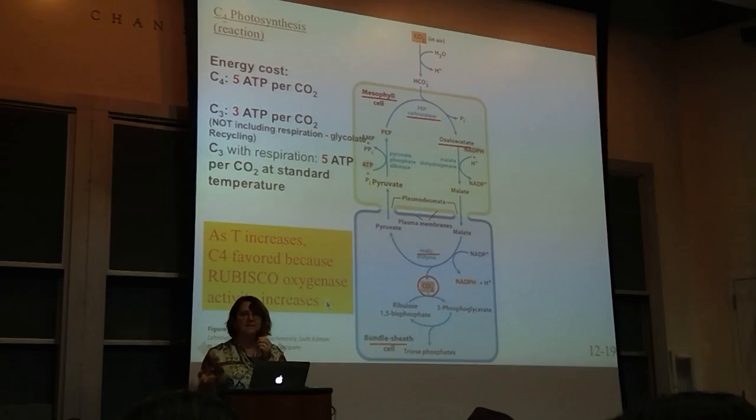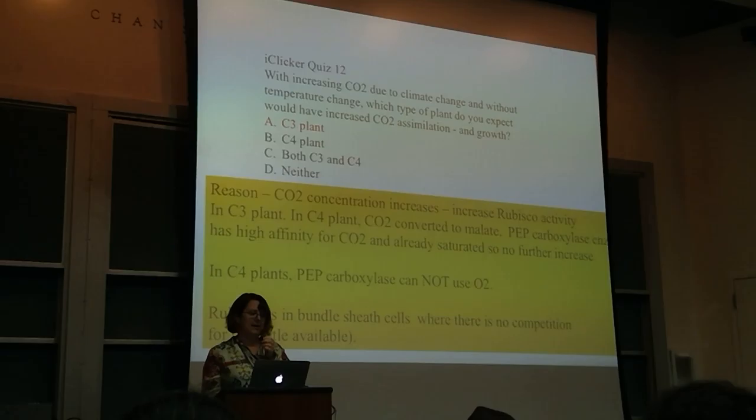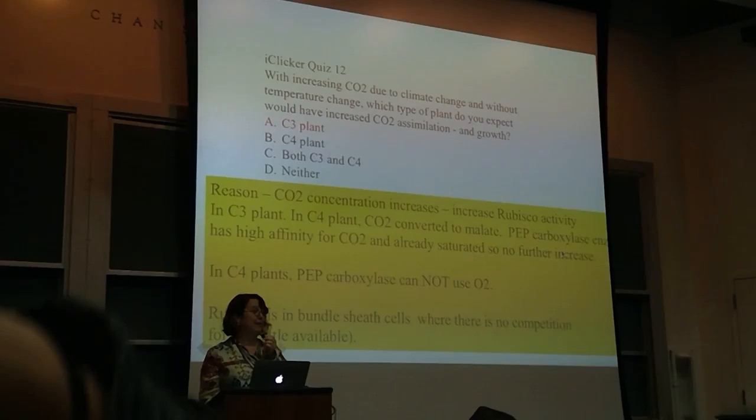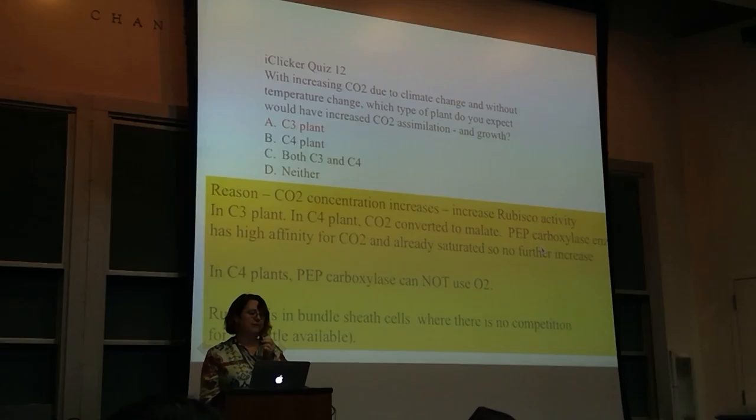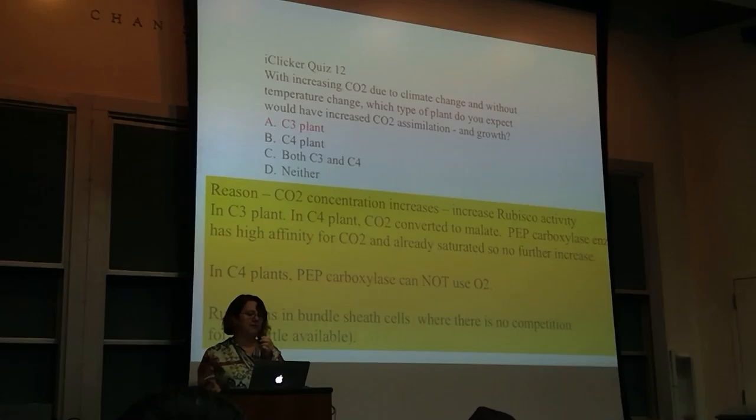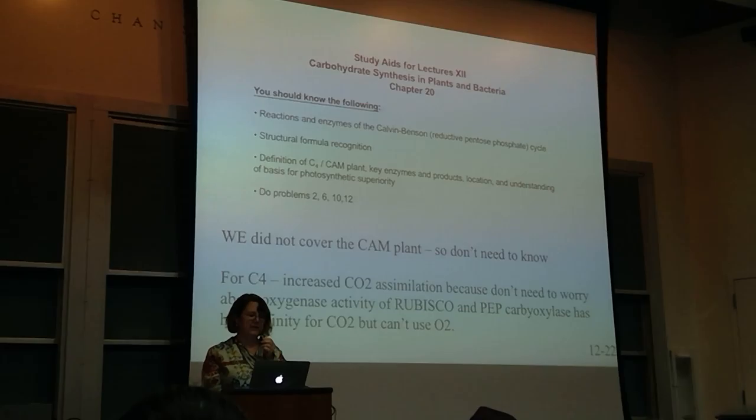As temperature increases, oxygenase activity is even higher, so you really would favor C4s—that's why C4 plants evolved in high-temperature areas. For CO2 increase, that helps the C3 plant—they'll get more cycles with CO2 rather than oxygen. But for the C4, the PEP carboxylase is already saturated and oxygen is not competing.